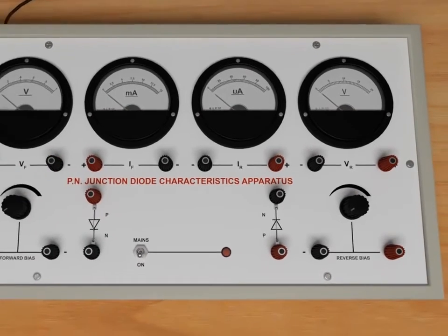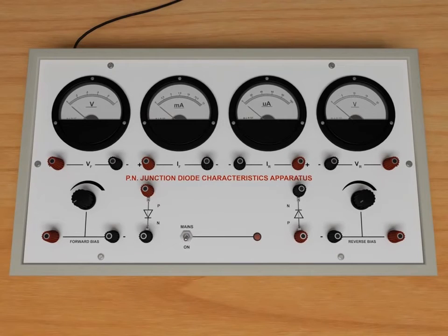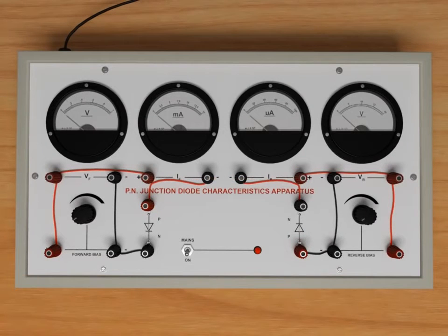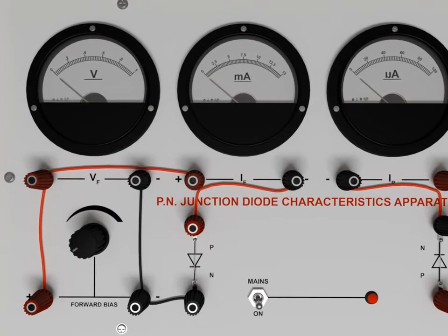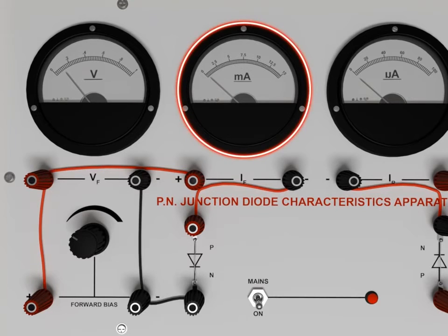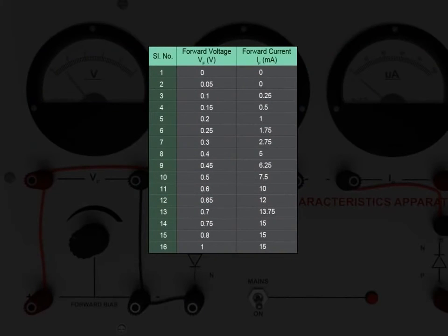Let us perform an experiment and study the characteristics of P-N junction diode in forward and reverse bias. Connect the wires as shown. For forward biasing, rotate the black knob on the left-hand side of the circuit board incrementally in steps of 0.05 volts and note down the corresponding readings in the milliammeter. Record your observations in an observation table.